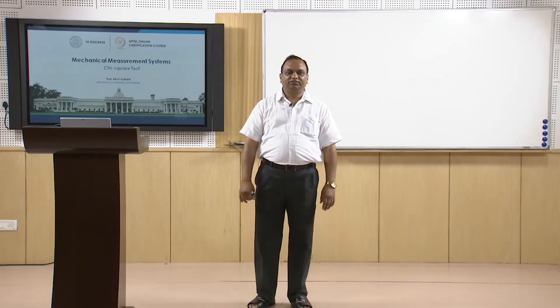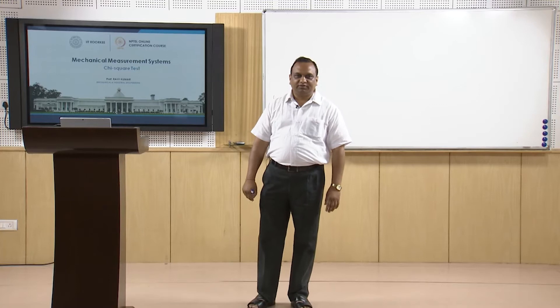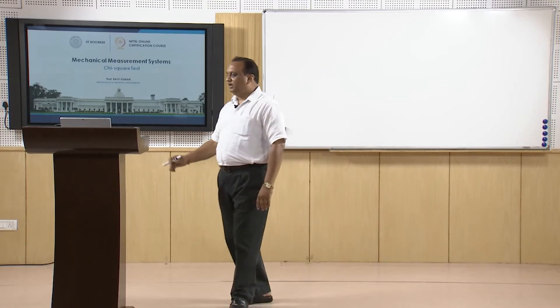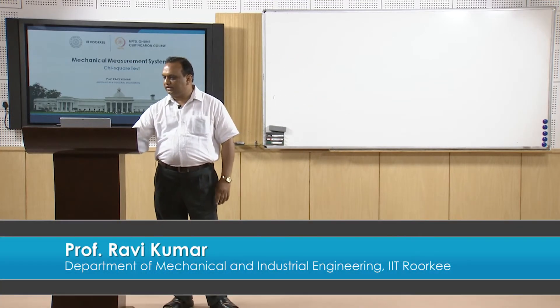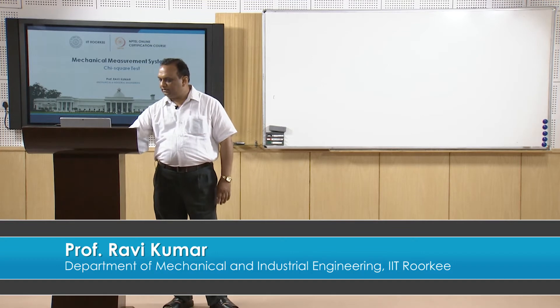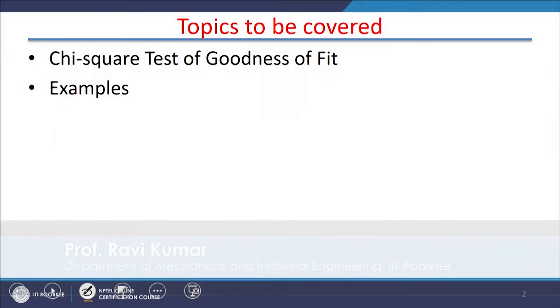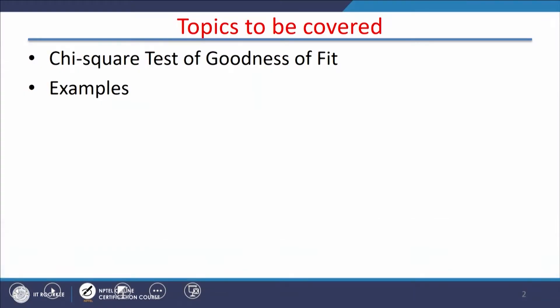Welcome to this course on Mechanical Measurement Systems. Today we will discuss the chi-square test and solve certain examples based on it. The chi-square test is a test of goodness of fit.